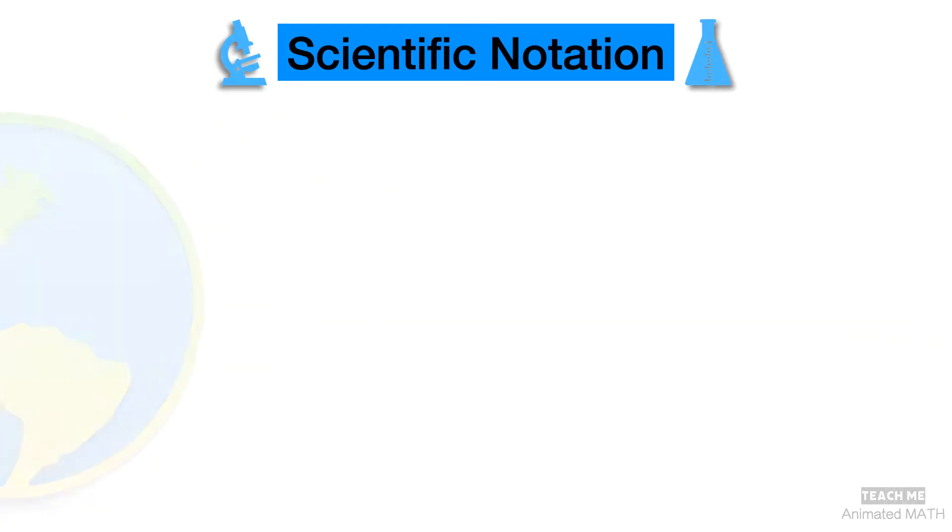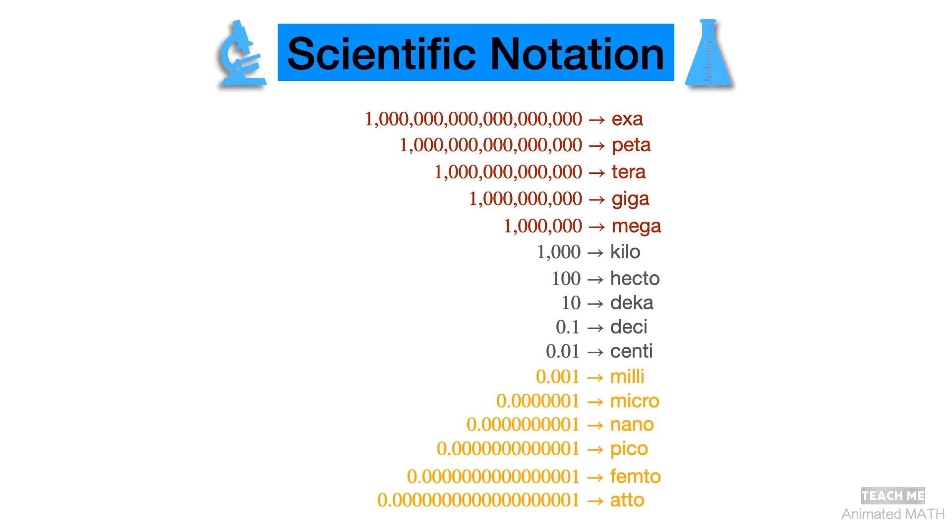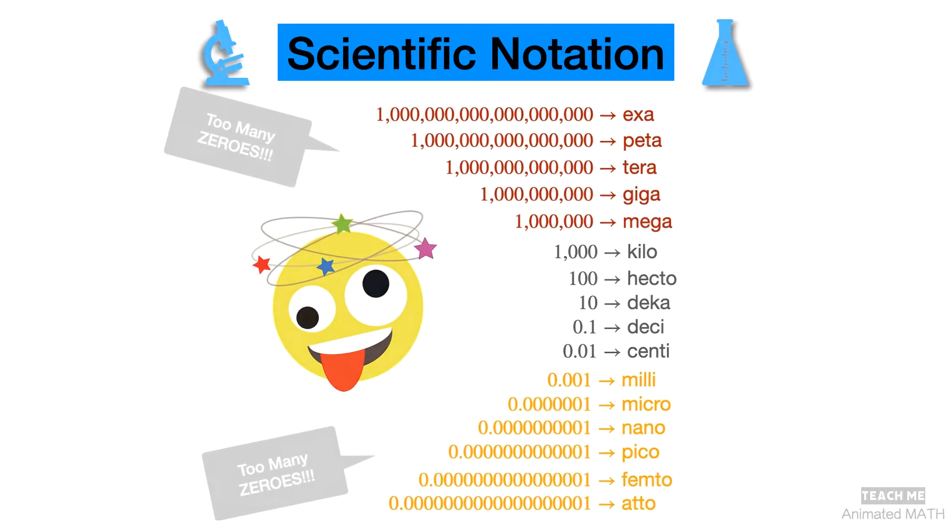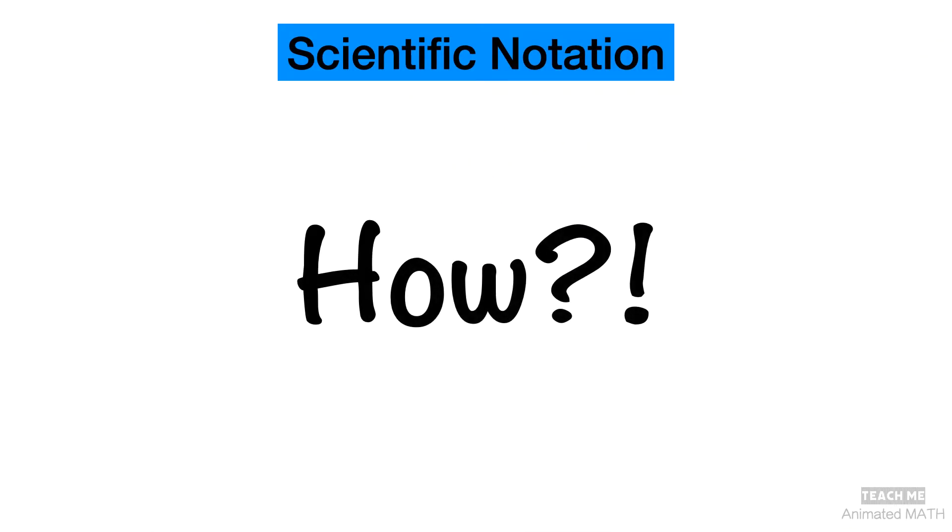You use scientific notation for very large and very small numbers—numbers that are burdensome to write because of how many zeros they have. So how do you convert a number into scientific notation?